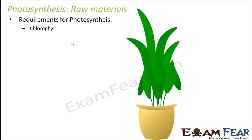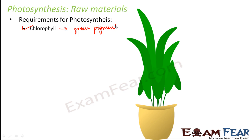For photosynthesis, there are a couple of things which are needed. Chlorophyll is one of them. So what is chlorophyll? It is a green pigment, a green colored pigment, which is present in the leaves of plants. Due to the presence of this green pigment, the color of the leaves is green — so most plants have green leaves due to the presence of this pigment chlorophyll. Chlorophyll is an important raw material for photosynthesis, and only plants which contain chlorophyll can perform photosynthesis.